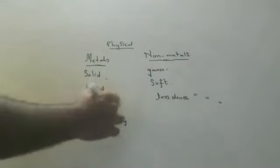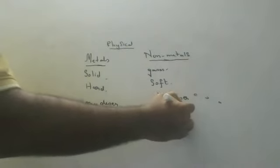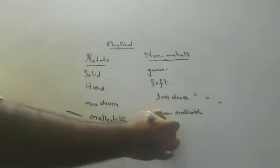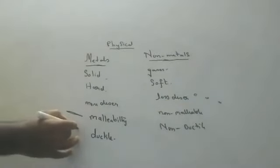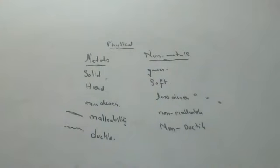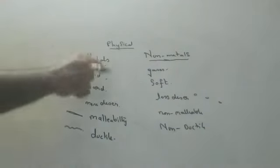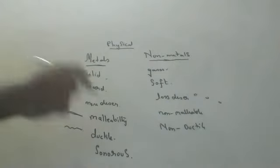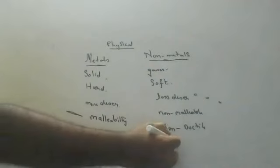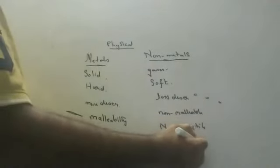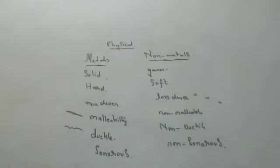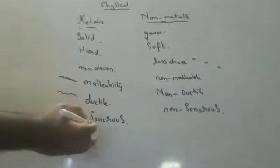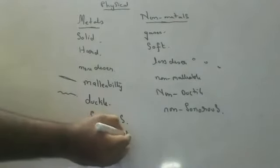The property by which metals can be beaten into sheets is called malleability, and non-metals are non-malleable. Metals are ductile — ductile means they can be drawn into wires. Non-metals are non-ductile. Metals give sound when you hit them — they are sonorous. Non-metals are gases, so you can't hit them, meaning they are non-sonorous.